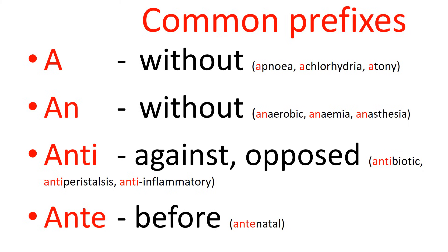Atony — the 'tony' part refers to the tone of a muscle. So atony is a condition where the muscle has lost its tone, its strength. For example, in the post-operative situation there could be a gastrointestinal atony, and if that's bad it could be a paralytic ileus where the bowel isn't working at all for a period of time.